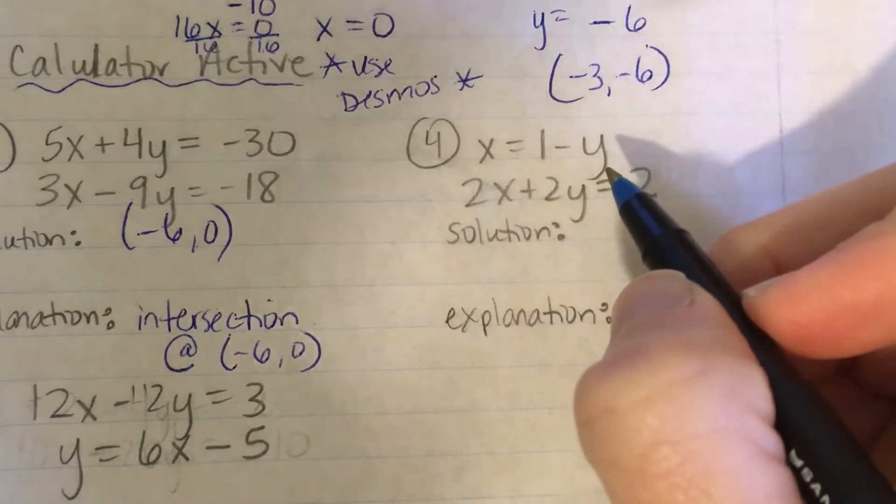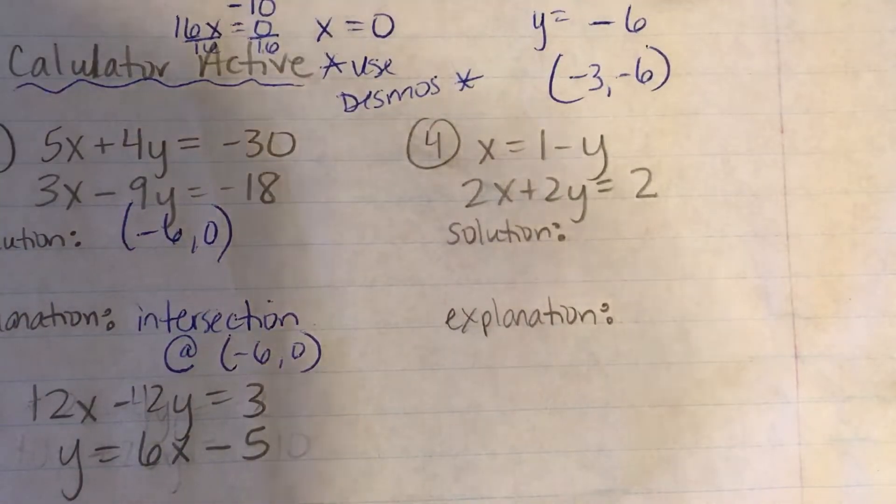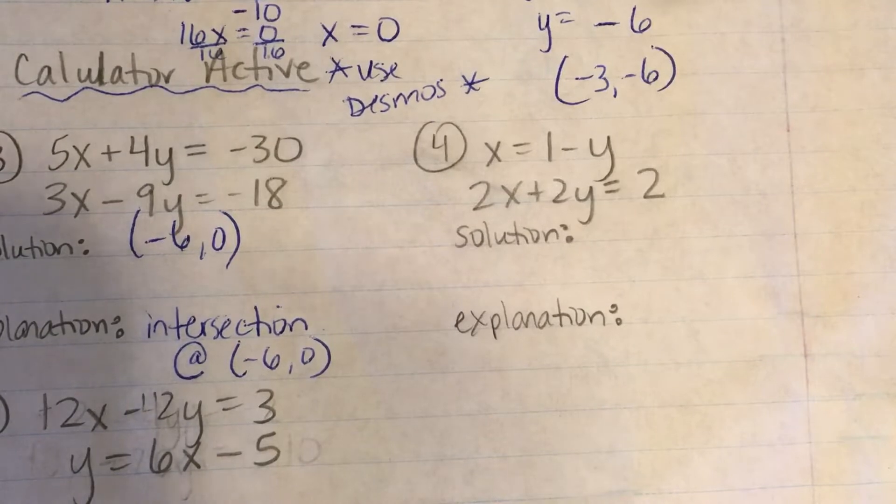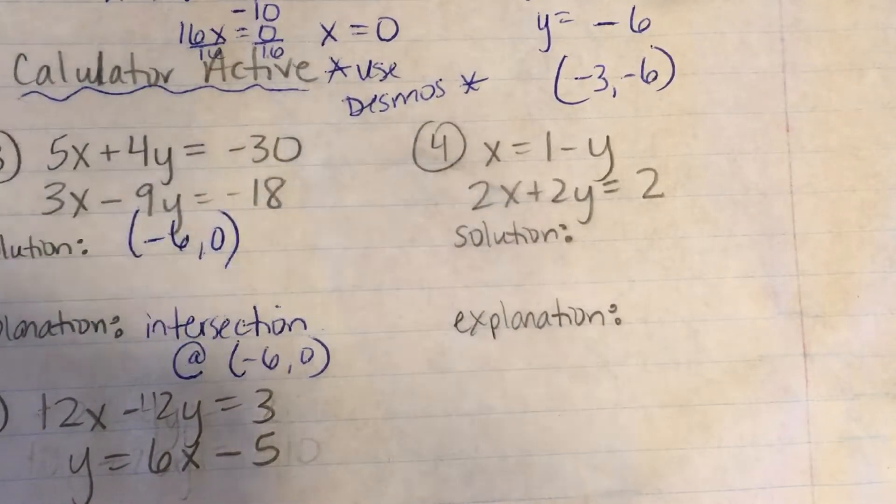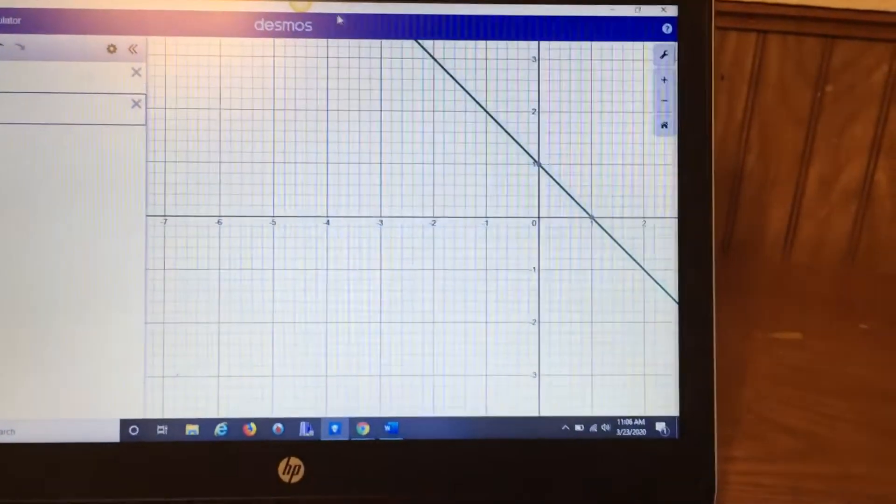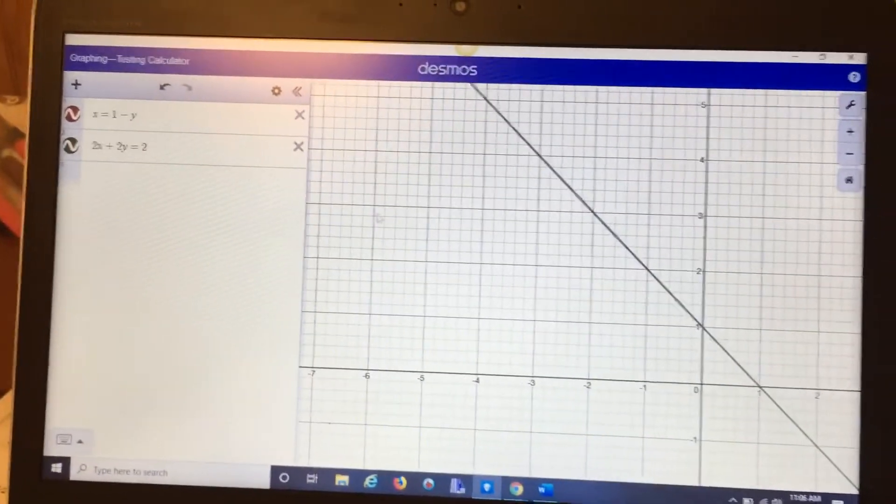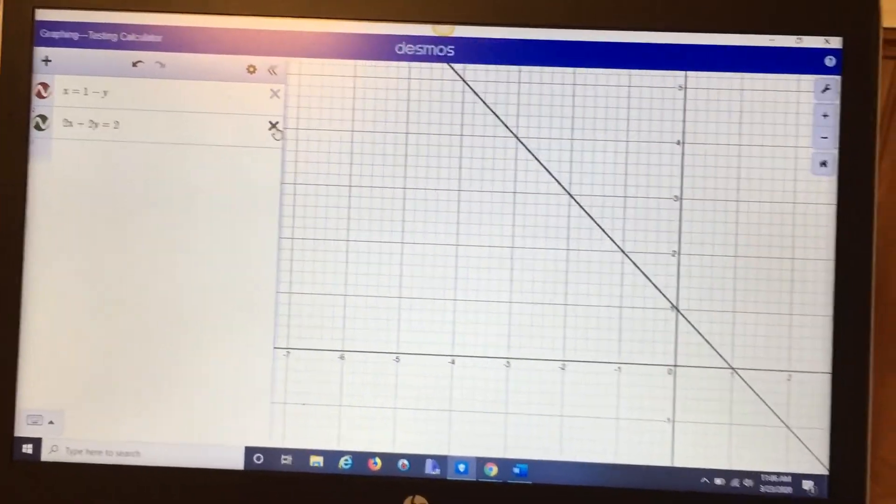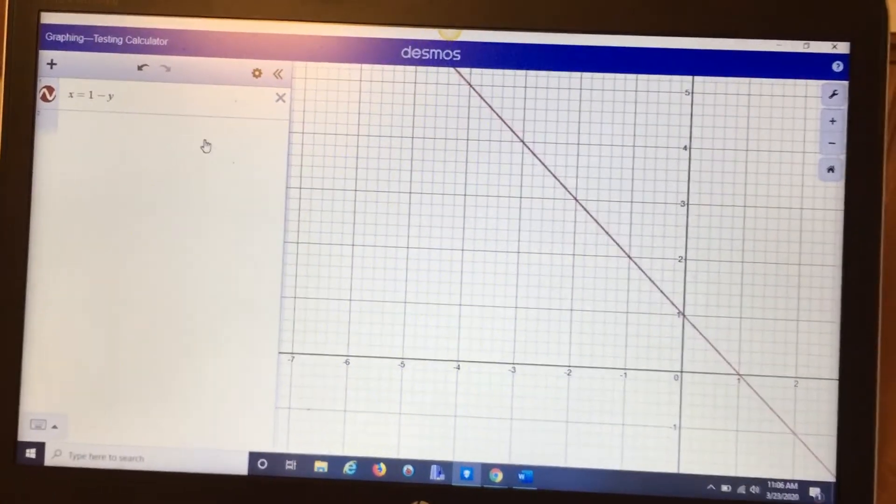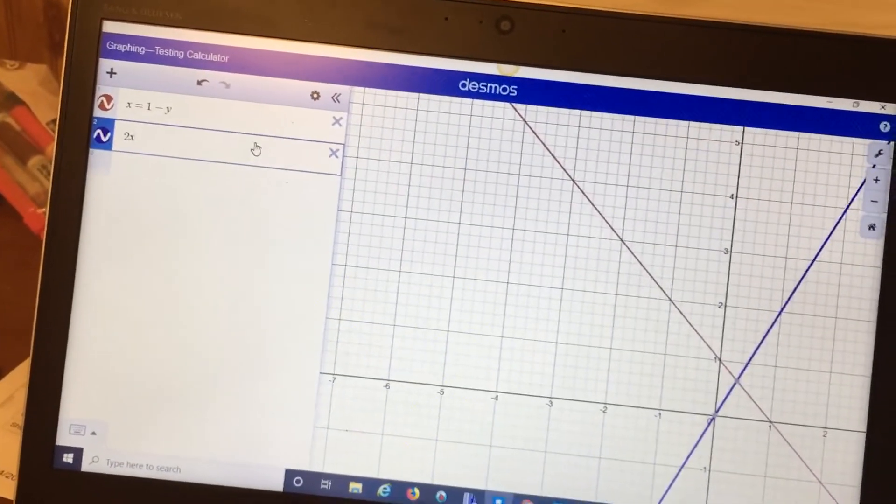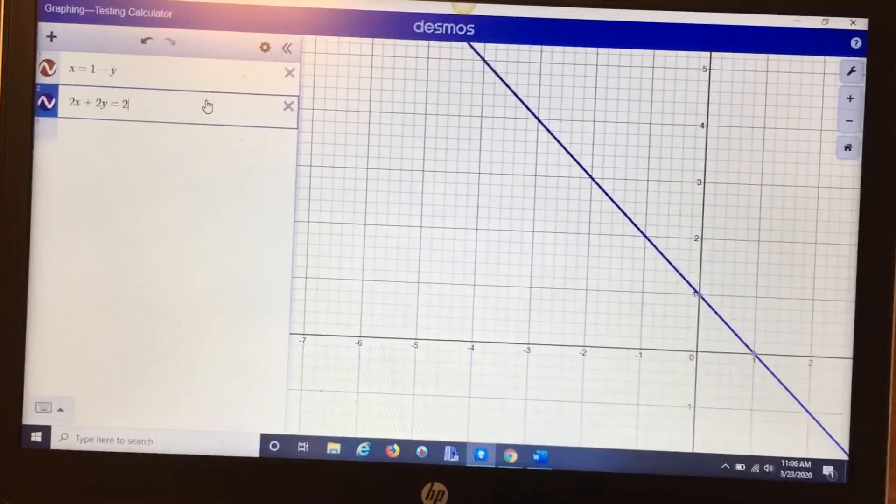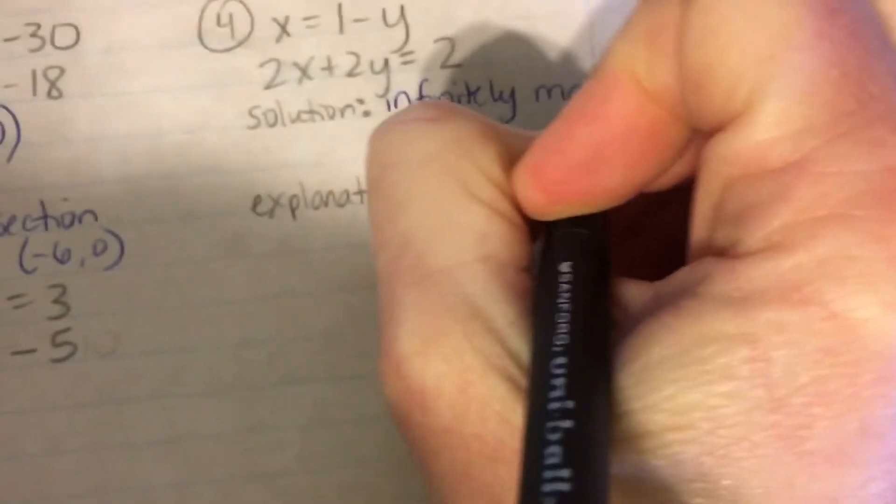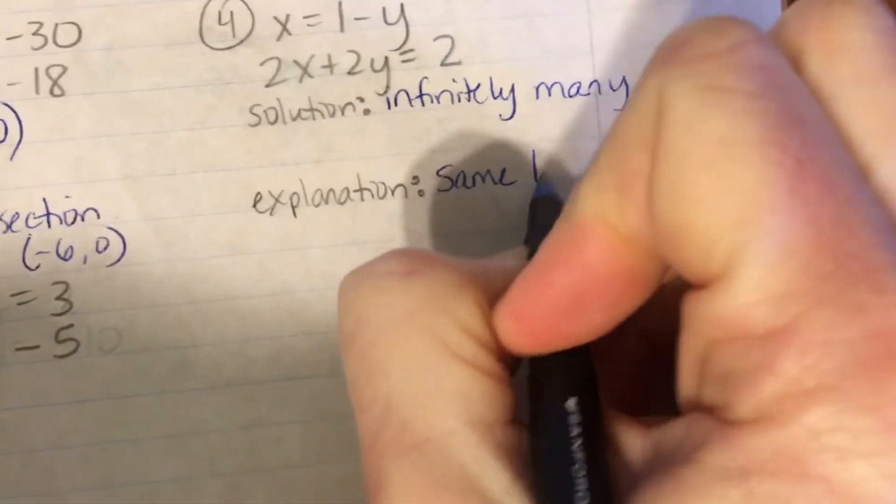Alright, number 4. This one's also calculator active, which means I can put it into Desmos. So I'm typing it in right now. X equals 1 minus y. And then, the other equation is 2x plus 2y equals 2. Alright, so I only see one line. And I don't see another one. Let me exit this one out again. Oh, okay. So that way I can see it's the same line. So if I type the other equation in again, 2x plus 2y equals 2, you can see that the purple one, the red turned into purple. So it's the exact same line. Do you remember what the answer is when it's the exact same line? Infinitely many solutions because they intersected infinite amount of spots. So it's infinitely many. And the explanation is it's the same line.